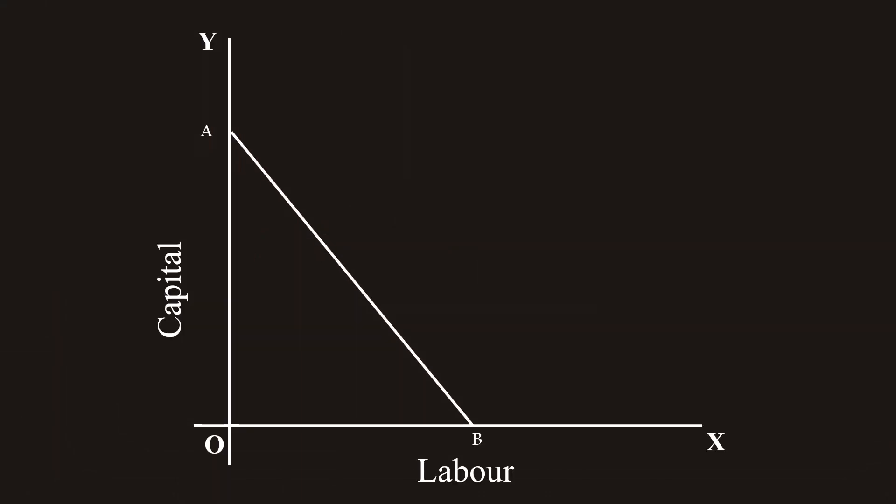2. Isocost line defined. See this graph. It illustrates the isocost line. It is a curve. It consists of combinations of two factors, namely labor and capital.